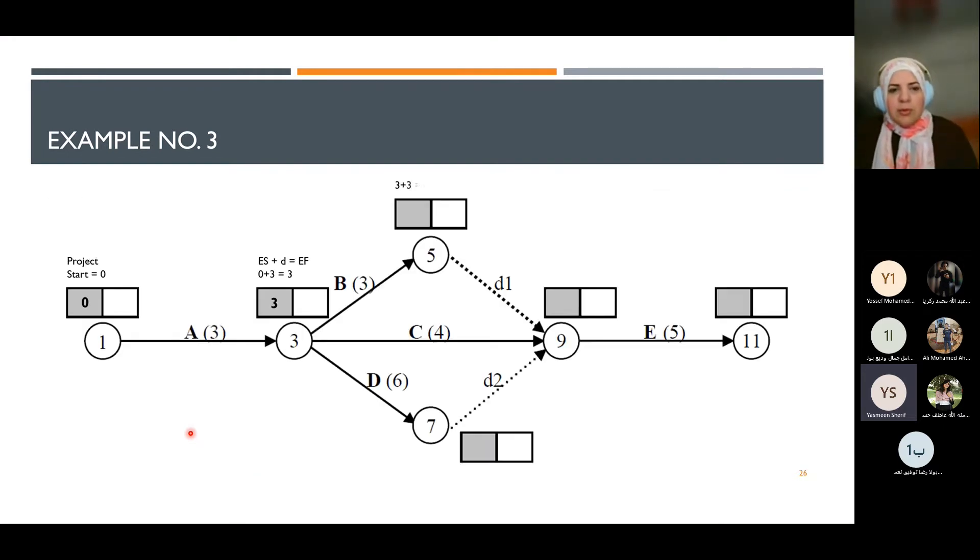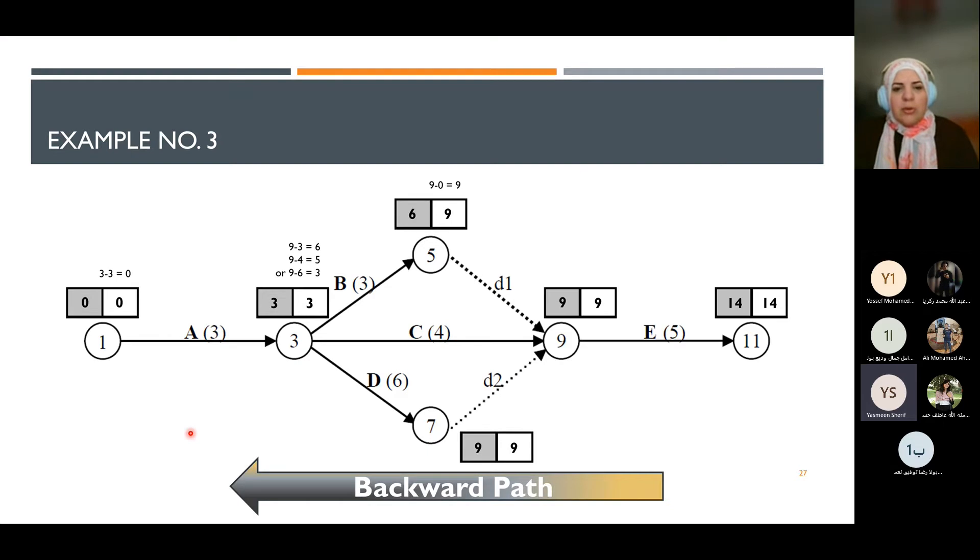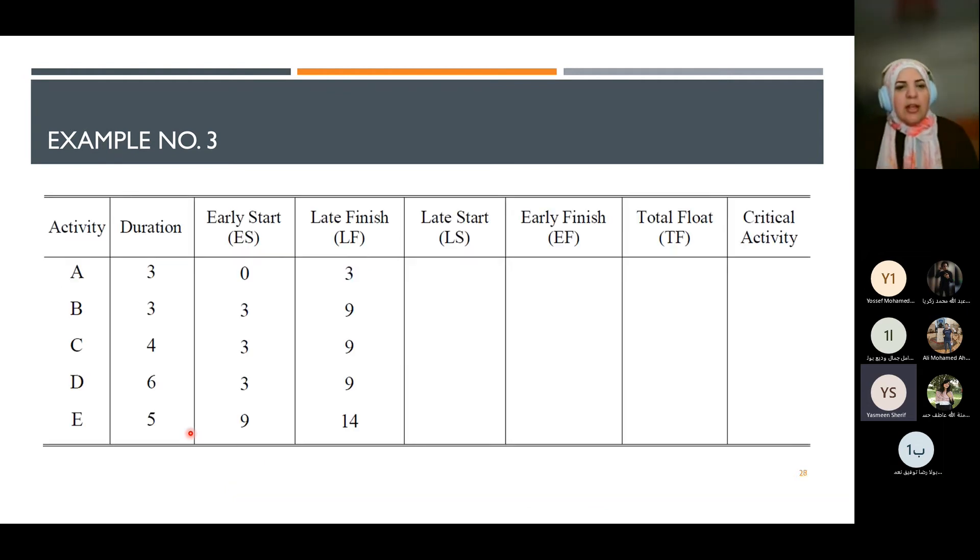We perform the forward pass and backward pass calculations. Using the predecessor activity information, we determine late finish and early start times. We organize this data in a table based on activity duration, then calculate late start and early finish times.